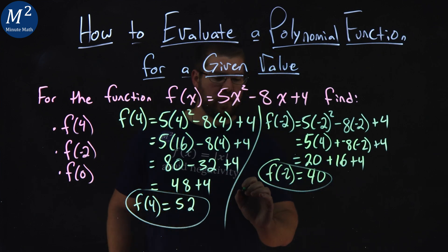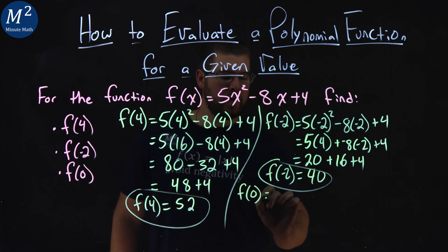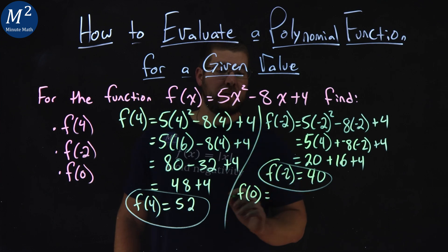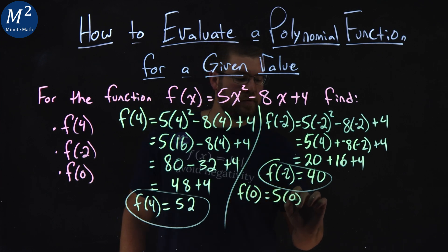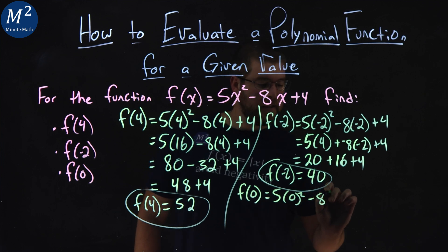And lastly, we'll deal with 0. I'll put it right here. It goes pretty quickly. f(0) here equals, substitute 0 in for x. 5 times 0 squared, minus 8 times 0, plus 4.